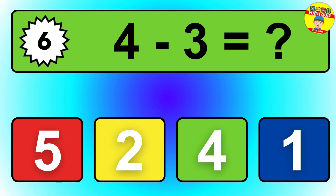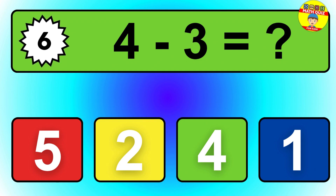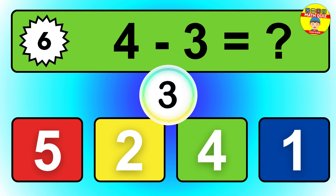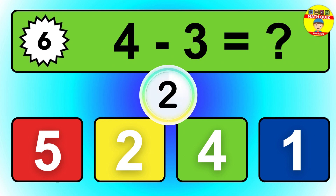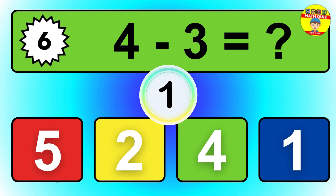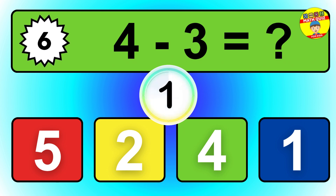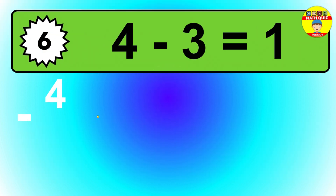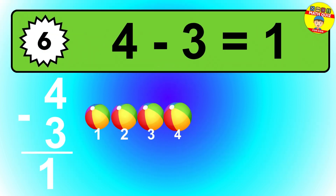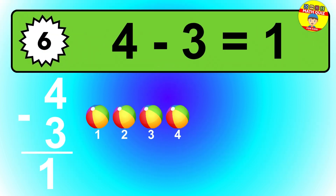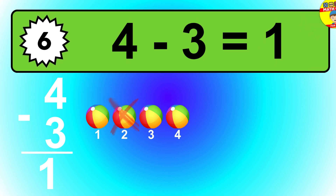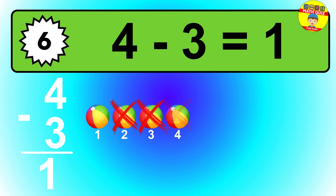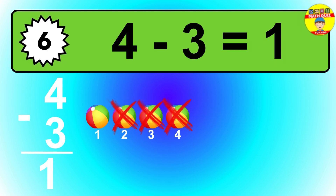Question 6. 4 minus 3 equals what? So the answer is 4 minus 3 is 1. Let's count it: 1.